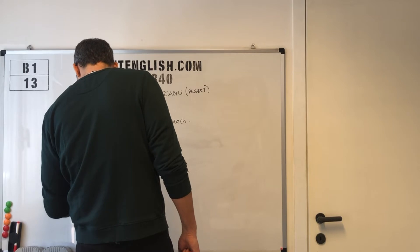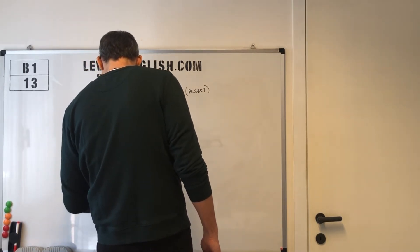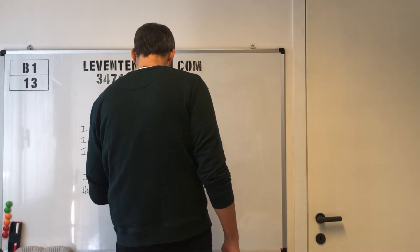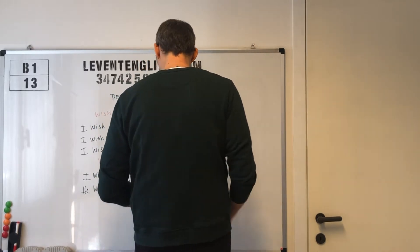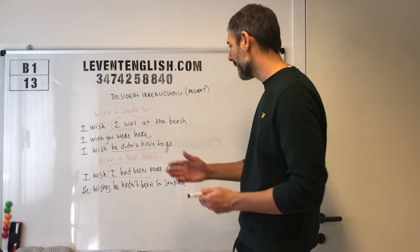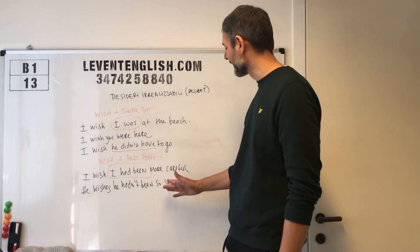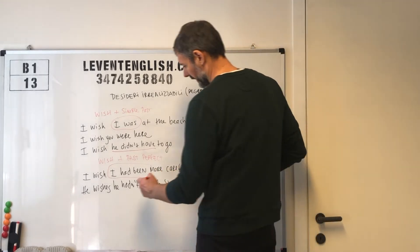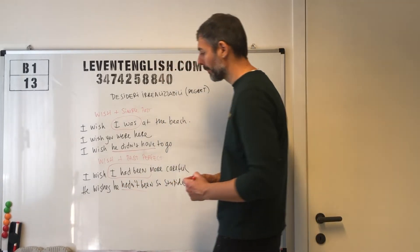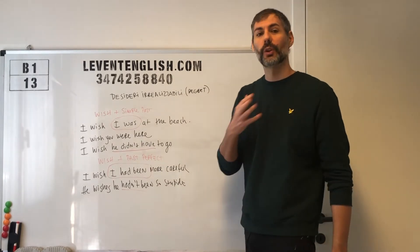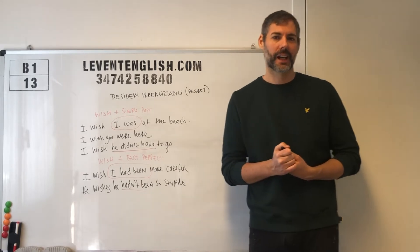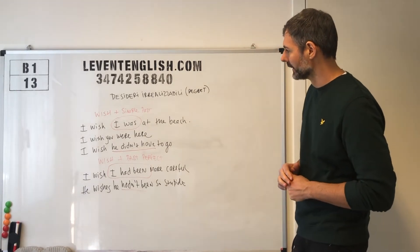Facciamo he wishes he hadn't been so stupid. Lui vorrebbe non essere stato così sciocco. He wishes he hadn't been so stupid. Come vedete, wish più past perfect per parlare di un rimorso circa qualcosa che è accaduto nel passato e mi piacerebbe poterlo cambiare. Questo è il senso.